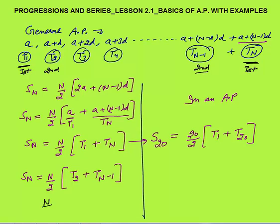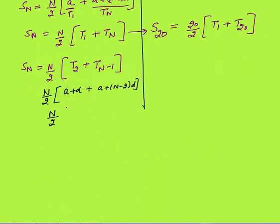This can also be written as n by 2 times t2 plus tn minus 1. What is t2? t2 is a plus d. What is tn minus 1? It is a plus n minus 2 into d. Solving this again you will get n by 2 times 2a plus n minus 1 into d — the same result.